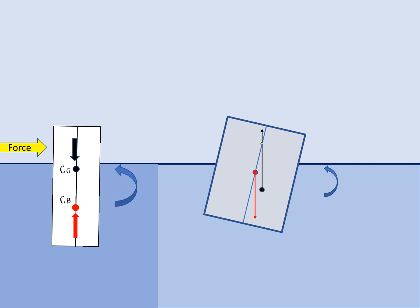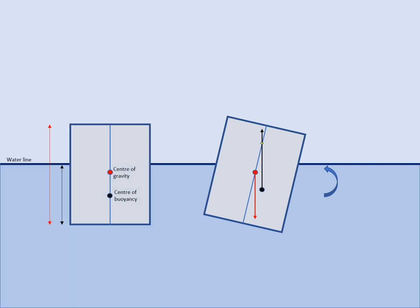The point where the new buoyancy line intersects with the old buoyancy line is called the metacentre, and we can say that the distance from the metacentre to the centre of gravity is our metacentric height.